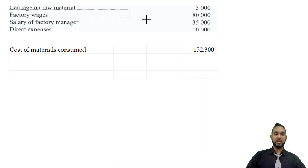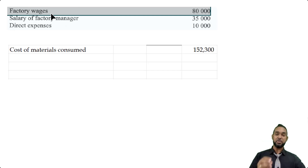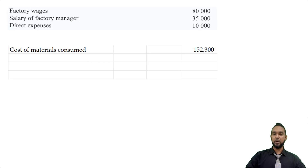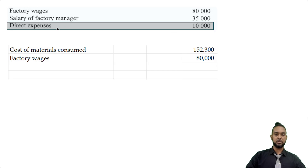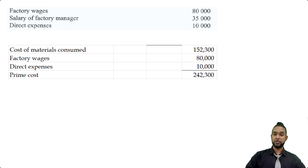Next, what about direct labor? We have factory wages, which we can safely assume is direct labor unless the question provides context suggesting otherwise. We also have a direct expenses item of $10,000, which we'll plug in as well. When we add all three items — raw materials consumed, factory wages, and direct expenses — together, we get prime cost, which the question specifically asked us to show.